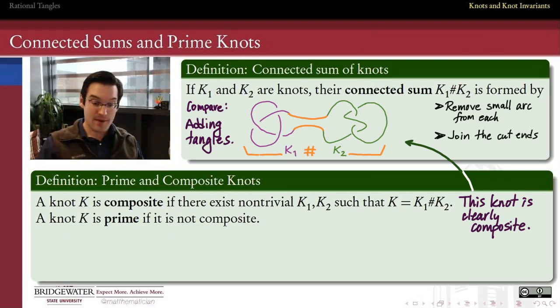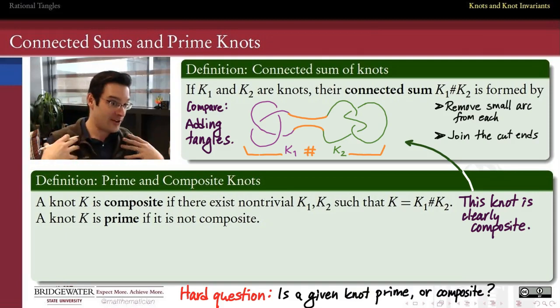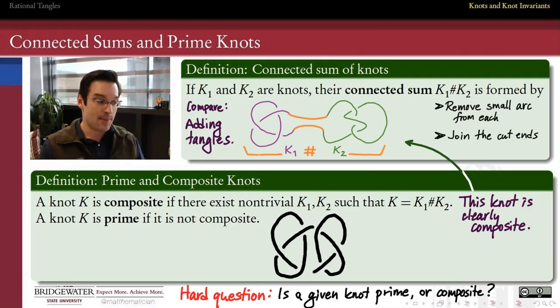So that's easy to see because that's how we built this knot. It would be just like coming up to me and saying, hey, is the number 2 times 7 a prime number? I can laugh at you and say, of course it's not, because you just told me that it's built out of 2 times 7, and neither one of those are trivial. So of course, it's a harder question, a much harder question. For a given knot, somebody hands me a knot without any explanation, which happens to me all the time, and asks me whether or not that knot is a prime knot or a composite knot.